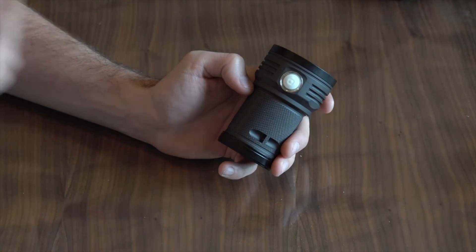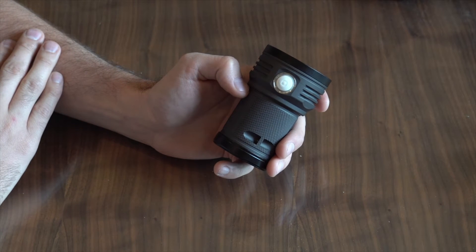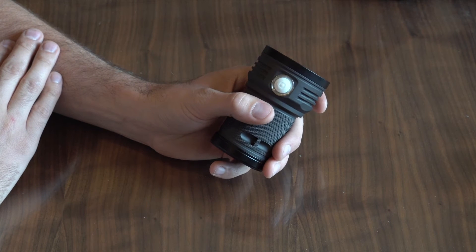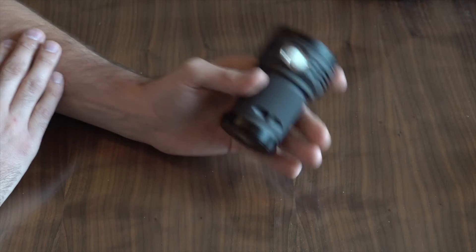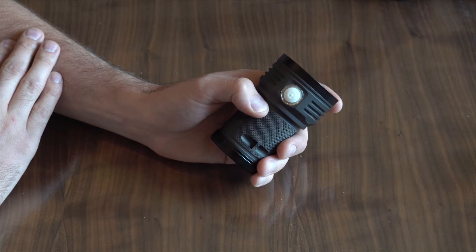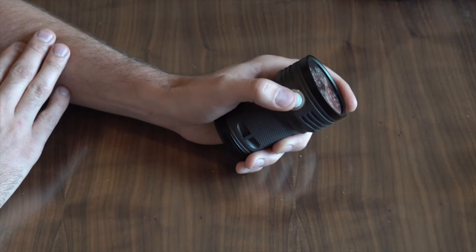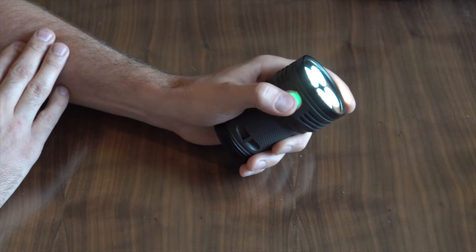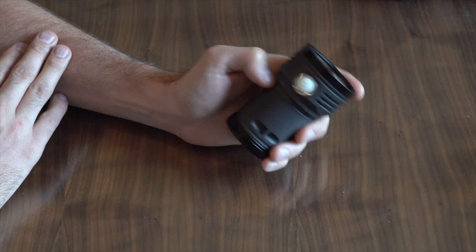A blue light means a fully charged battery. The battery will then change to green and to red as it is depleted. Now if you wanted to enable or disable this function you do two clicks and then hold. So right now it's turned on so we're going to give it two clicks and hold. One two and hold. Now that function is disabled.